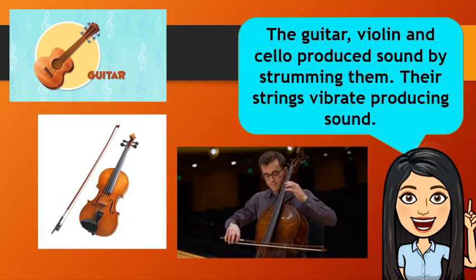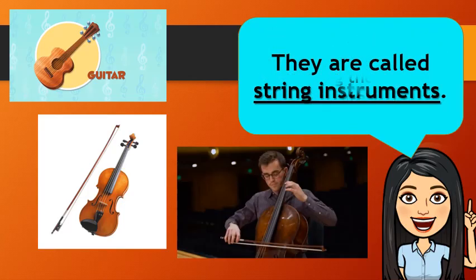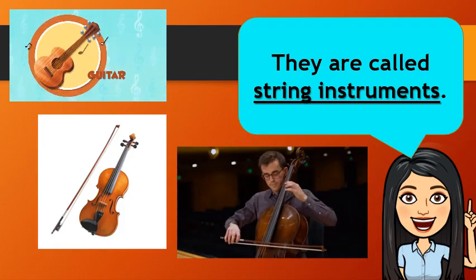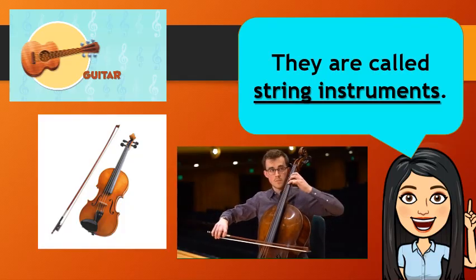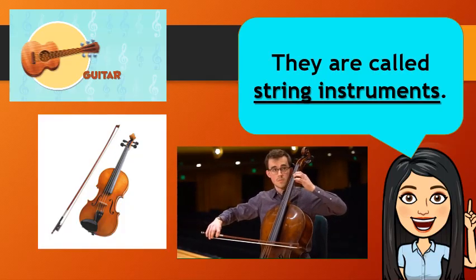The guitar, violin, and cello produce sound by strumming them. Their strings vibrate, producing sound. They are called string instruments. Sound in string instruments is produced by plucking or striking stretched strings.